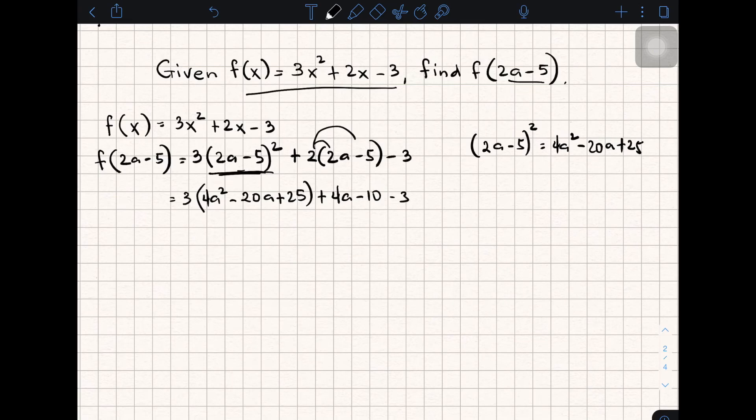As you can see, we still need to simplify or eliminate the parentheses. So by distributive property, in multiplying 3 times 4a², that is 12a², and then 3 times -20a, that is -60a. 3 times 25, that will give you 75 plus 4a, minus 10, minus 3.